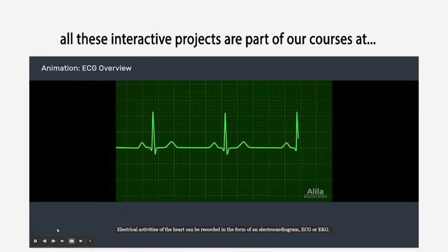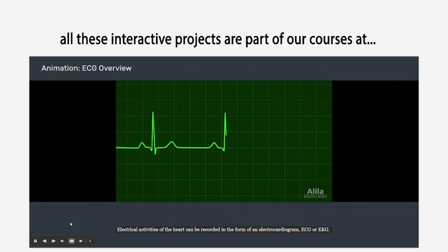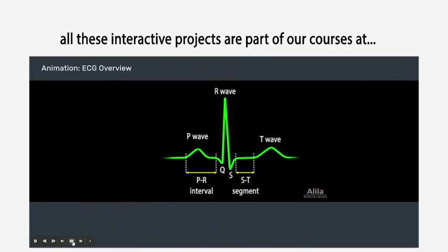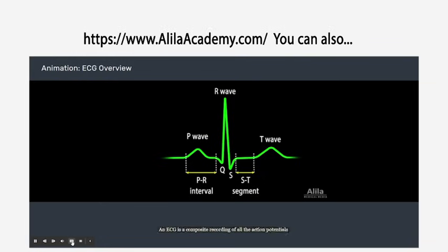Electrical activities of the heart can be recorded in the form of an electrocardiogram, ECG, or EKG. An ECG is a composite recording of all the action potentials produced by the nodes and the cells of the heart. Each wave or segment of the ECG corresponds to a certain event of the cardiac electrical cycle.